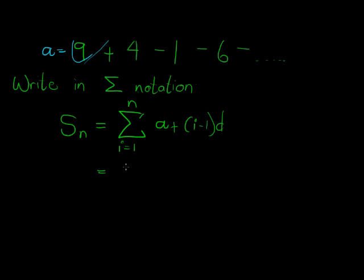So that is the sum of i equal 1 to n of a which is the first term 9 plus i minus 1 times d which is negative 5. So let's just simplify it.